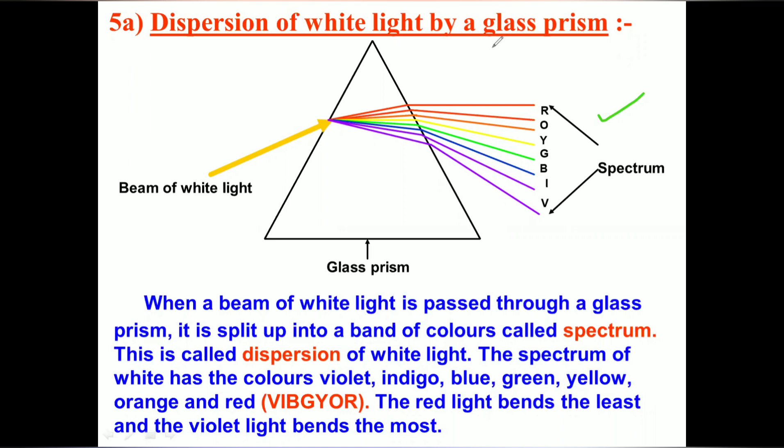These are called VIBGYOR, also called a spectrum or visible spectrum. We have studied the most deviated ray or color and the least deviated color.